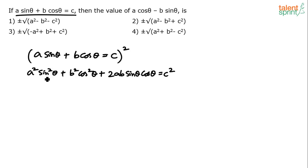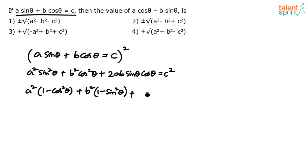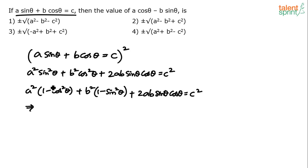Now take sin²θ = 1 - cos²θ and cos²θ = 1 - sin²θ. Substituting: a²(1 - cos²θ) + b²(1 - sin²θ) + 2ab·sinθ·cosθ = c². Expanding: a² + b² - a²cos²θ - b²sin²θ + 2ab·sinθ·cosθ = c². Rearranging: a² + b² - c² equals the remaining terms moved to the right side.